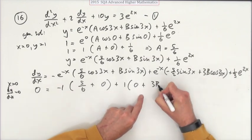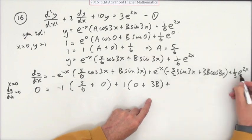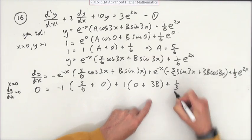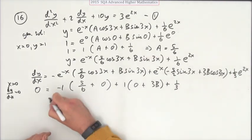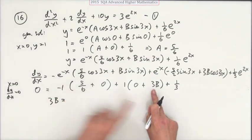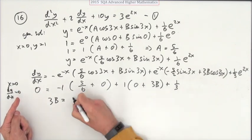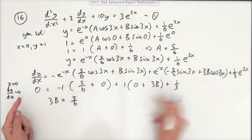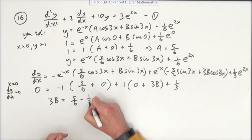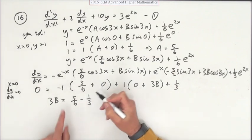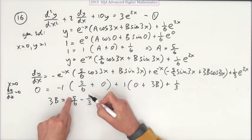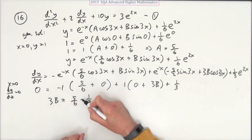Plus cos of 0 is 1, so that's 3B, and e^0 is 1, so it's plus a third. So if I keep my 3B, I'll put it over here. If I keep 3B and move the other things over the other side, that'll become plus 5/6, but minus a third. So that's going to be five bits take away two is three bits, that's going to be a half.